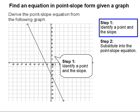Step 1: Identify a point and a slope. We're going to identify one point and we're going to use negative 3 comma 4.